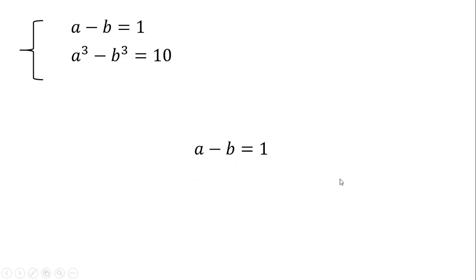Now let's bring back a minus b equals 1. Let us square both sides. If we do this, we will have the equation a squared minus 2ab plus b squared equals 1.